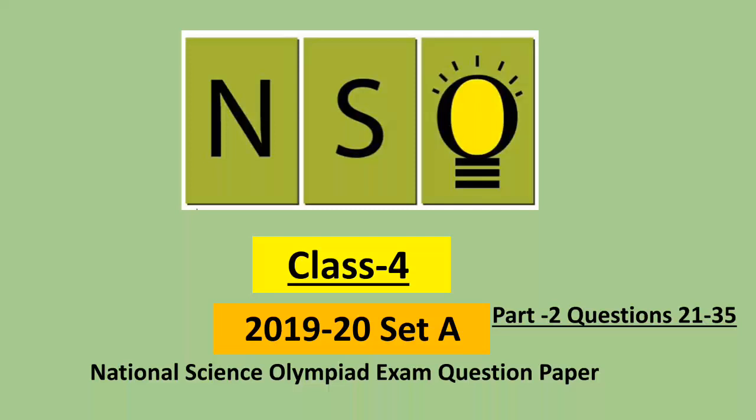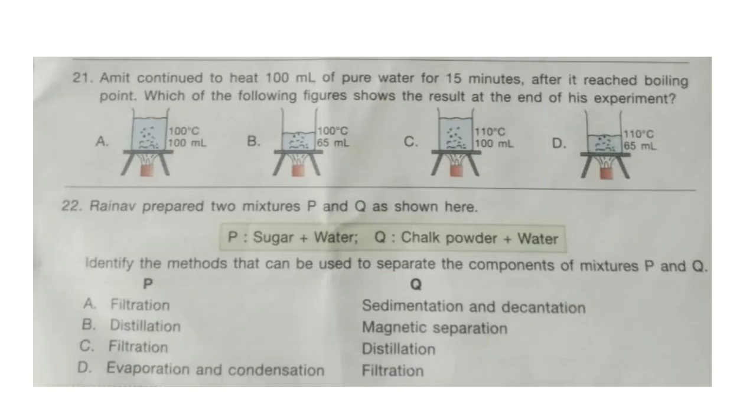Welcome to our channel Olympiad Trainer. In this video I am going to show you the question paper of NSO, i.e. National Science Olympiad exam for class 4, year 2019, set A. In this video we are going to solve questions 21 to 35. For questions 1 to 20, please watch part 1 video. Link of this video is given in the description box. New users please subscribe our channel Olympiad Trainer for more such solved question papers. So let's start with question 21.